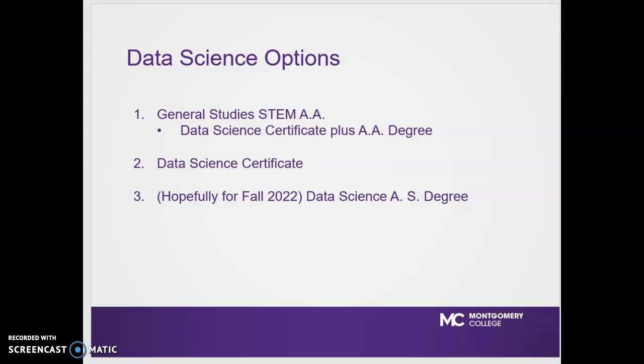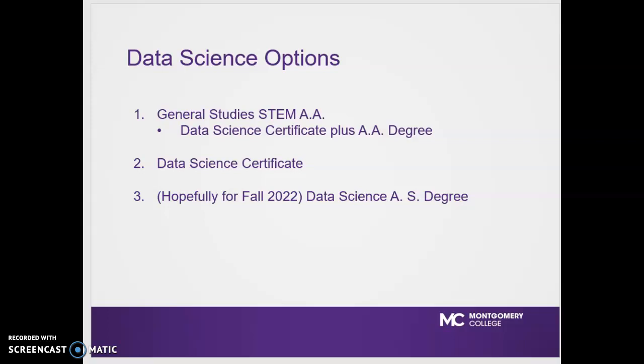We currently have two data science options: a data science certificate and a general studies STEM associate's degree with the data science certificate concentration. Our program outcomes are open-ended for the most part, because we would like to leave them to change and evolve as the data science courses evolve.